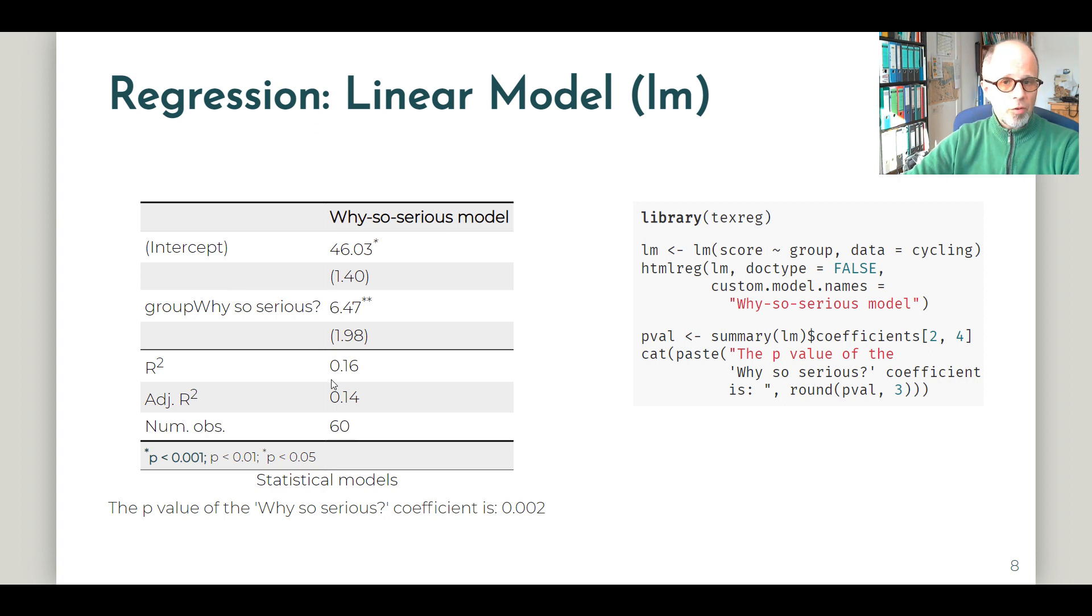Of course, the regression model aims at a different interpretation. So here we also get an R-squared value, which we don't see in the t-test. So here we can conclude that if we know the training method, whether cyclists had more fun during their training, or were just all serious about their training. If we just know that training method, we can explain about 16% of the variability in cyclists' performances.